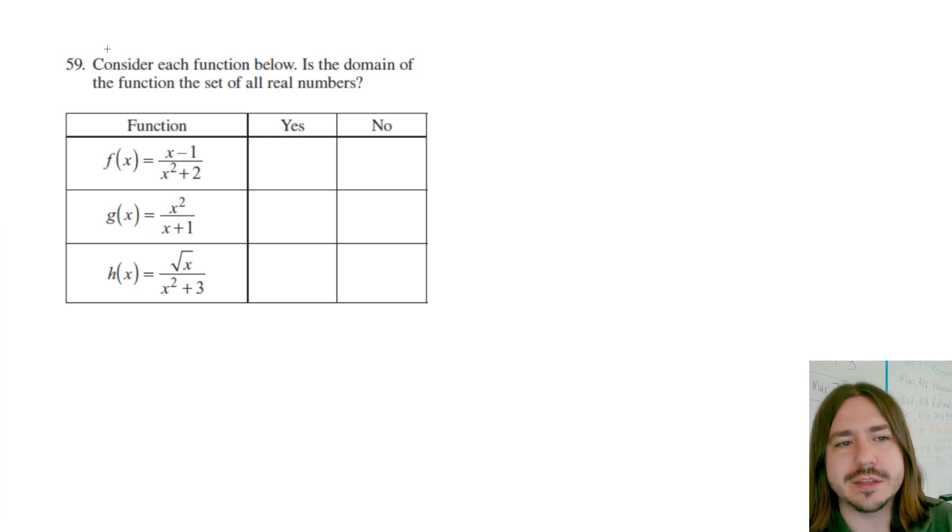In order for the domain to be the set of all real numbers, your function has to have a value for every input of x. In other words, every x value that you can think of, you can plug that in there and the function equals something.